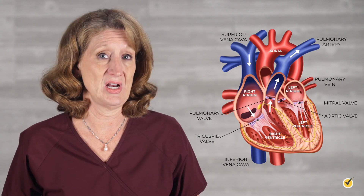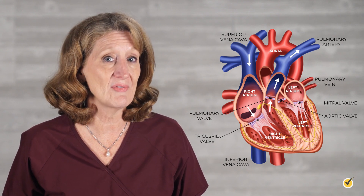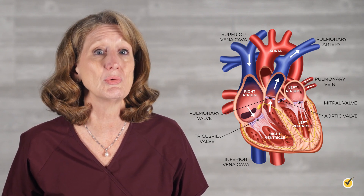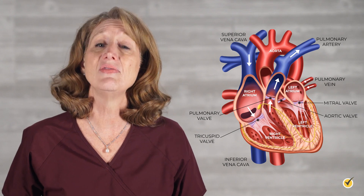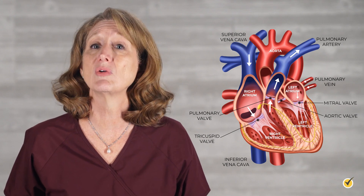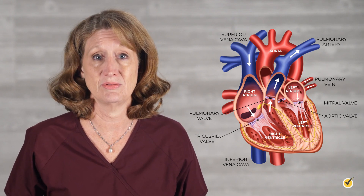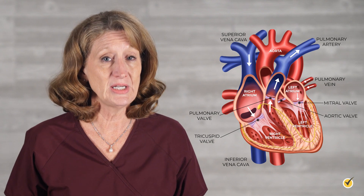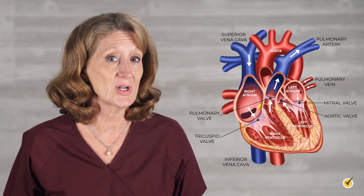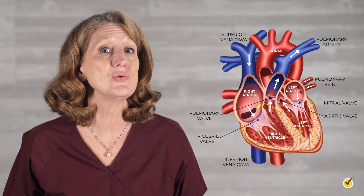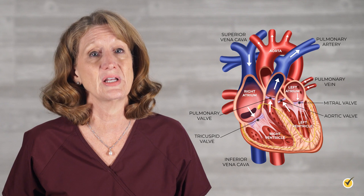Once oxygenated, the blood returns to the left atrium through the pulmonary veins and then through the mitral valve into the left ventricle. From here, the blood goes through the aortic valve and into the aorta and general circulation.